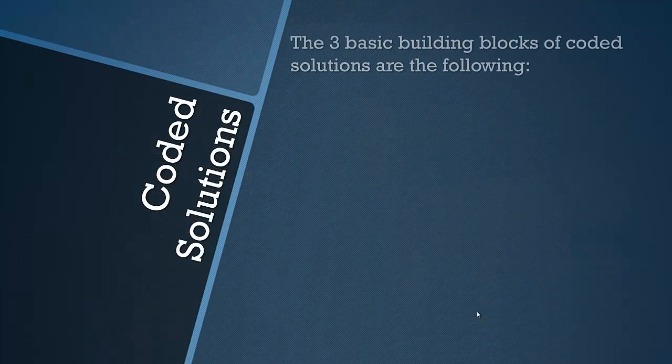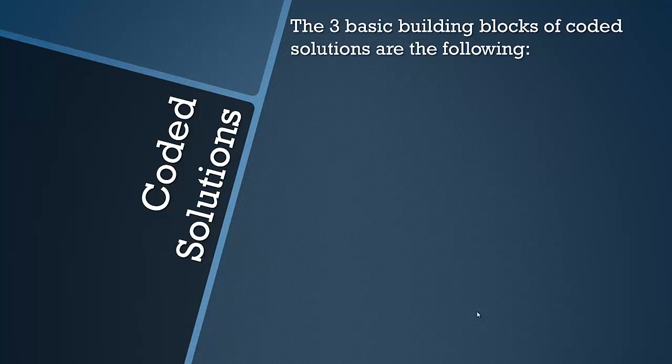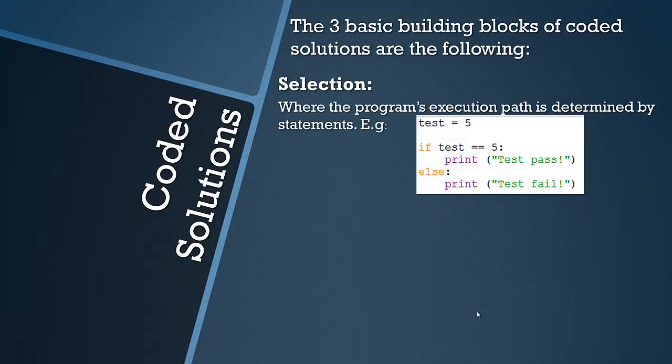So now finally let's have a look at the coded solutions for basic building blocks, which is basically how a program flow can be controlled. You can make selections in your code which is where the program execution path is determined by statements, so case statements, and we'll look at those in a future video.